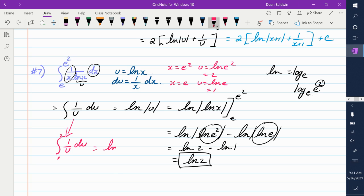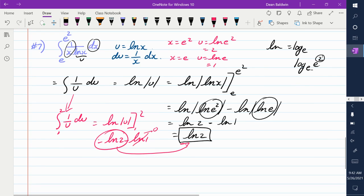So it would be the integral from 1 to 2. That is equal to the natural log of u, from 1 to 2, which is natural log of 2 minus natural log of 1. And again, that's 0. So you get that. And you can put that all in your calculator, and you would get the same answer.